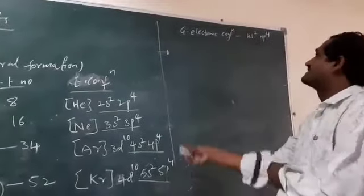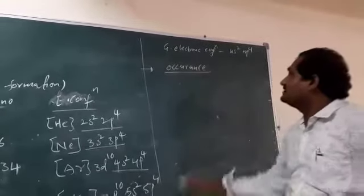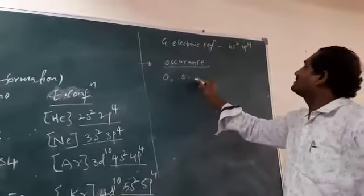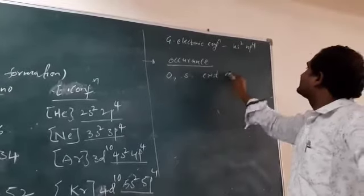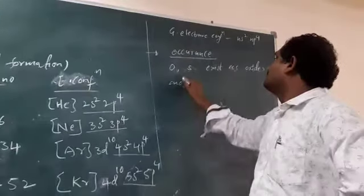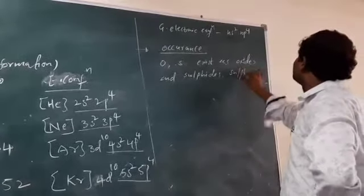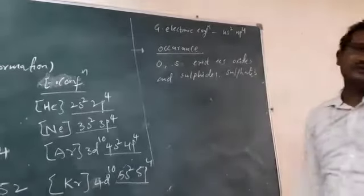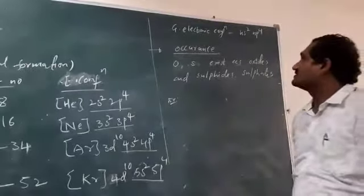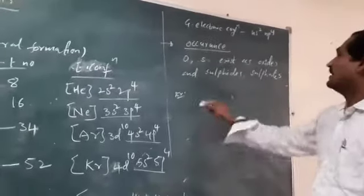Occurrence. If you see in this group, oxygen and sulfur mostly exist as oxides form and sulfides and sulfates form. They are existed in the crust generally as oxides and sulfides form and sulfates.